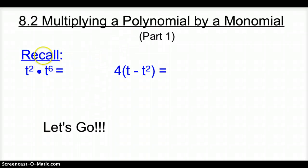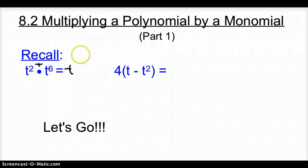First, let's remember that when we multiply two variables together, what do we have to do with the exponents? We have to add the exponents. So we have t to the 8th, because we added the exponents.